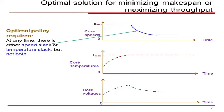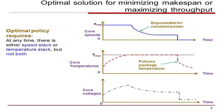Once the temperature reaches the maximum, the core speeds are adjusted such that there is no slack in the core temperature. For a task with uniform power consumption, the speed profile is given by an exponential function. Once the execution of a task is completed, the core speed is set to zero and the core temperature follows the package temperature. The core voltages are derived to satisfy the circuit delay constraint.